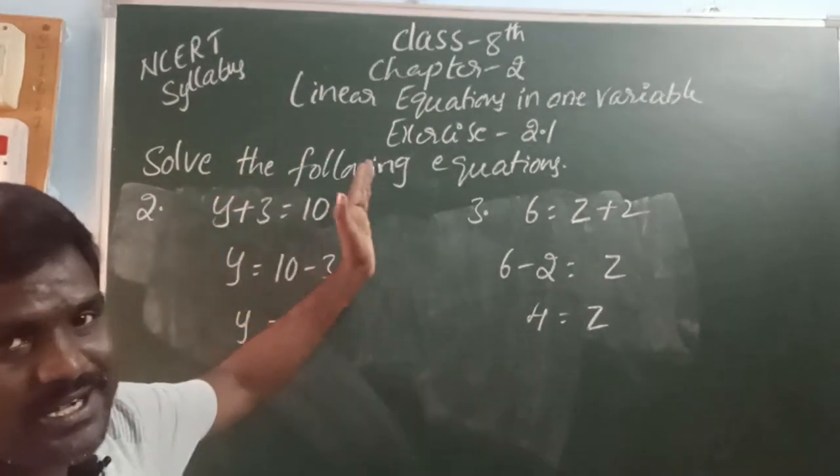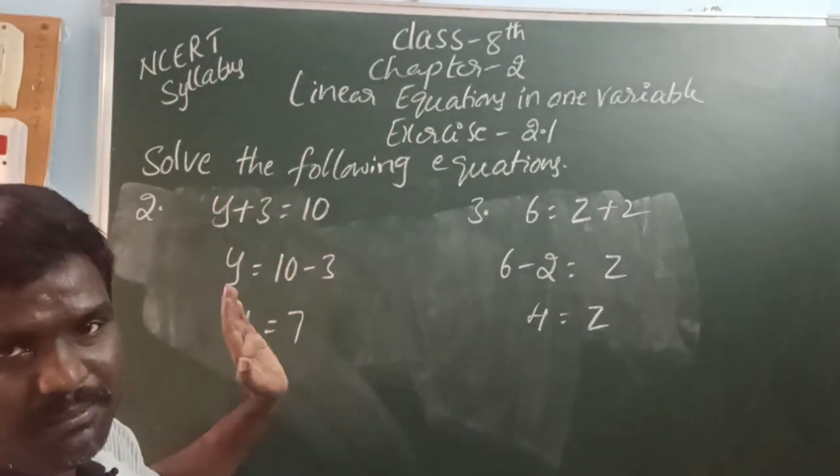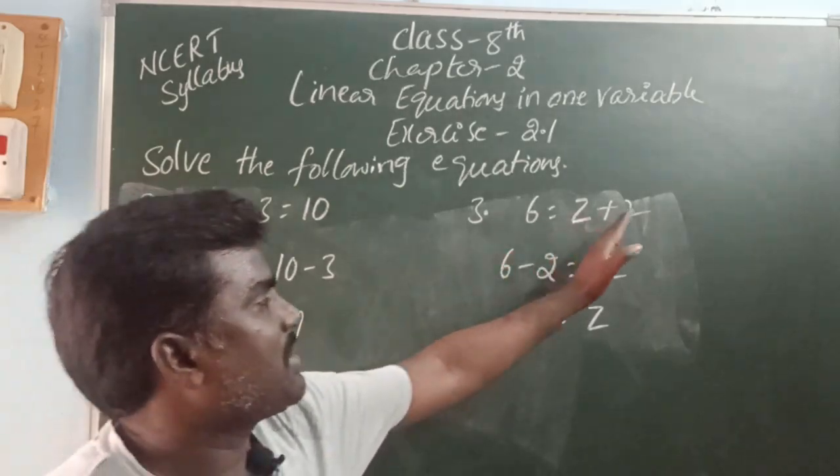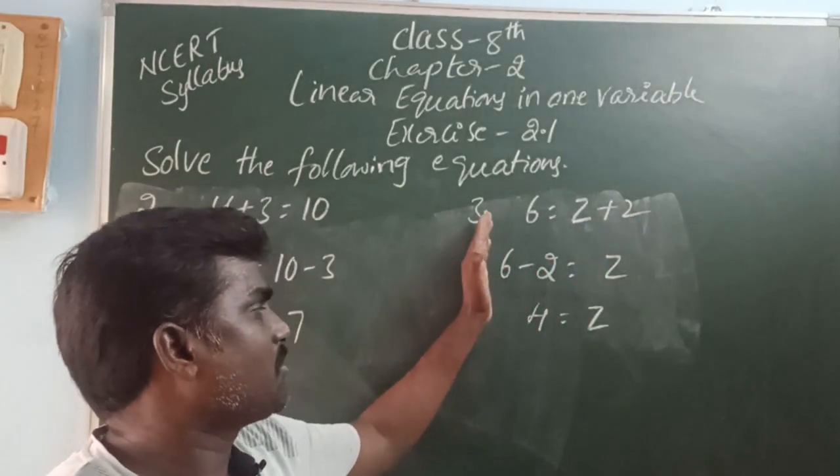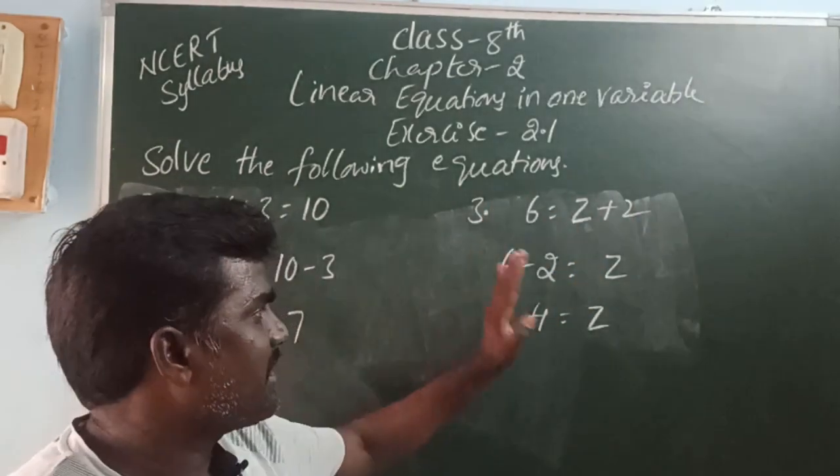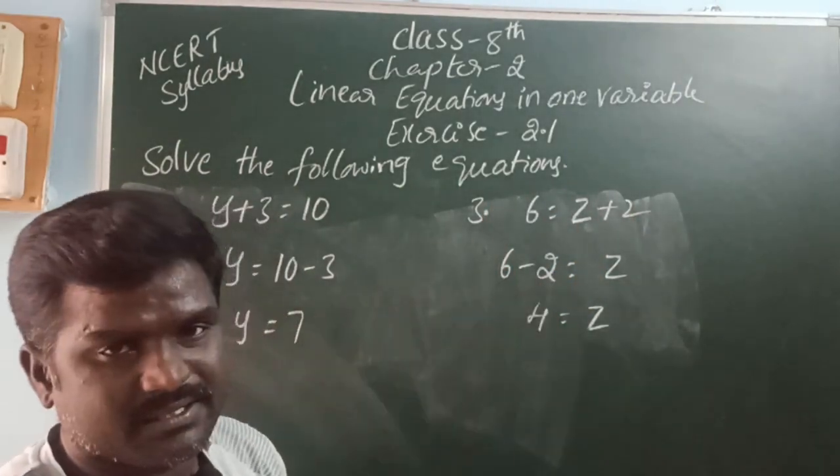Here, plus 3 is moving to the right side and it becomes minus. And plus 2 comes to the left side and it becomes minus.